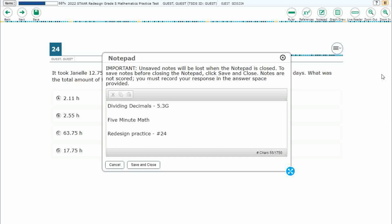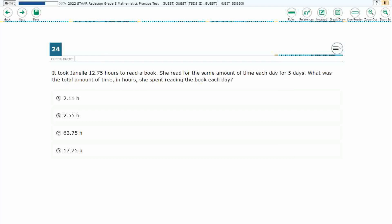Hello and welcome to 5-Minute Math. Today we are looking at the fifth grade concept of dividing decimals. This is standard 5.3 G in the great state of Texas and we are using item number 24 of the redesigned practice online STAAR test.